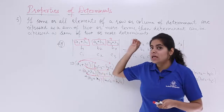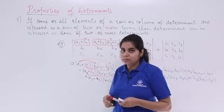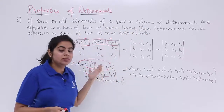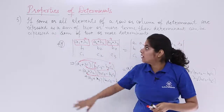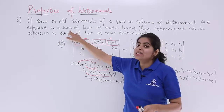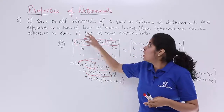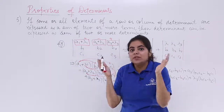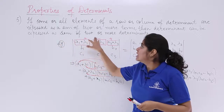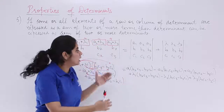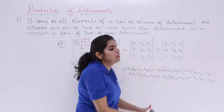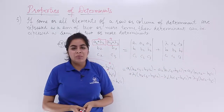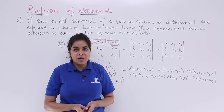Reading the formal statement: if some or all elements of a row or column of a determinant are expressed as a sum of two or more terms, then the determinant can be expressed as the sum of two or more determinants. If two terms are added, you get two determinants; if three terms, you get three determinants, and so on. This is property number 5 of determinants.